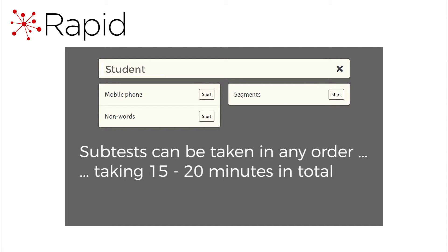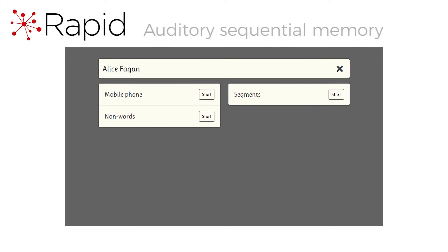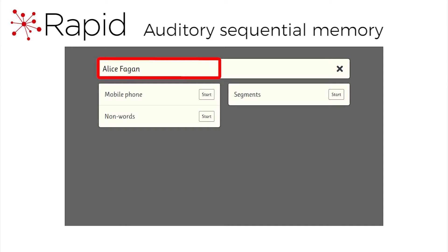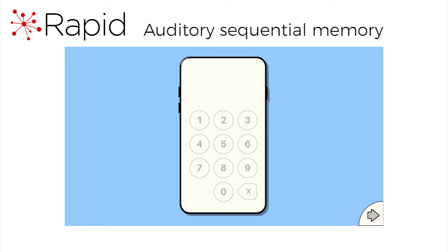The subtests can be taken in any order and will take 15 to 20 minutes in total. Let's look at the test of auditory sequential memory. This student is 14 years old, so she will see the mobile phone game. In this game you have to remember telephone numbers. When you hear a telephone number, enter it on the mobile phone keypad, then use the arrow to move on. If you make a mistake, just use the delete button. Get ready to start. Three, five, nine.